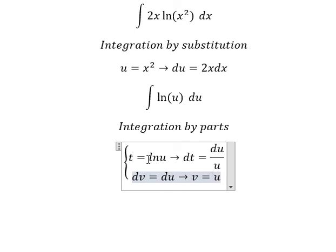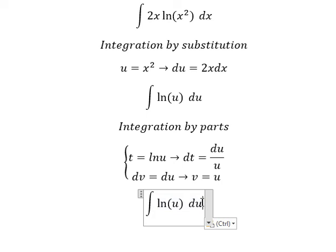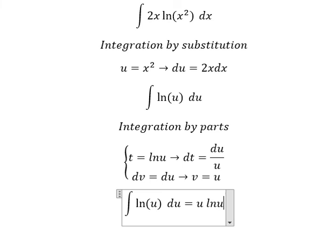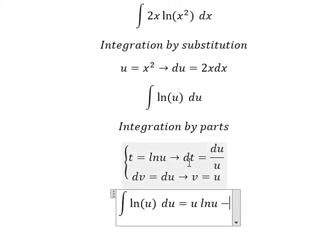So we apply the integration by parts formula: t times v, which is u ln(u), minus the integral of v dt.